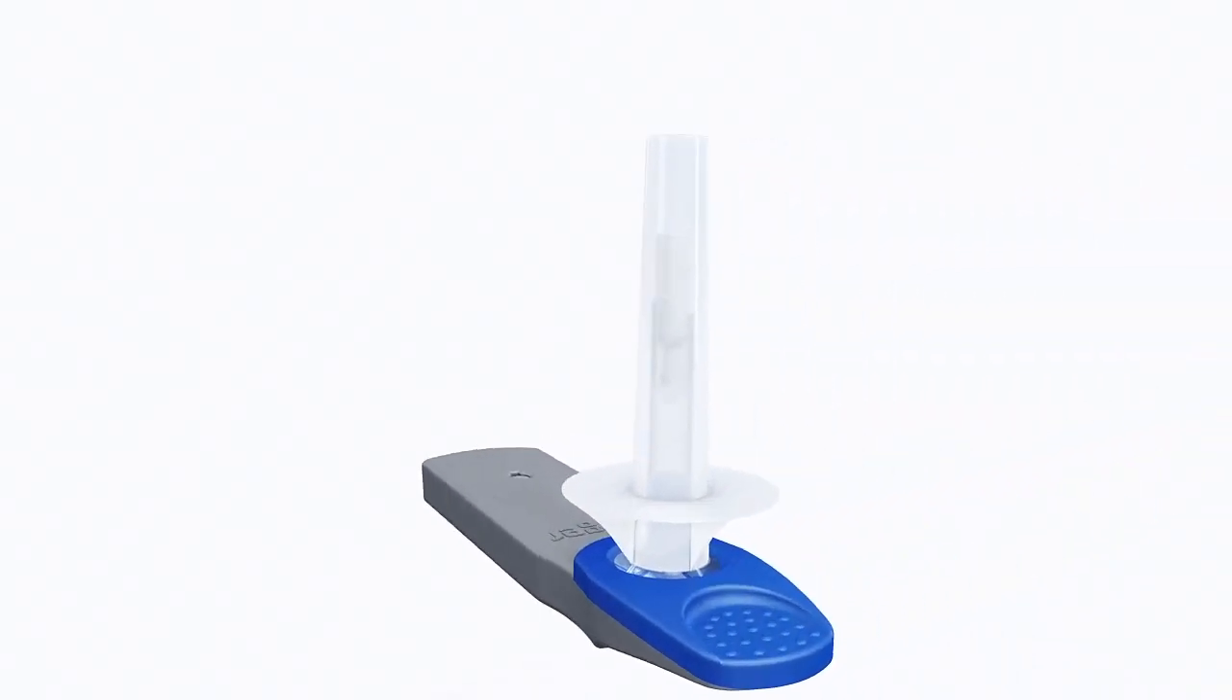To collect a sample, take the test cassette out of the foil pouch and remove the cap. Now hand the test cassette to the test person. The test person should move the collector back and forth from one cheek to the other several times.